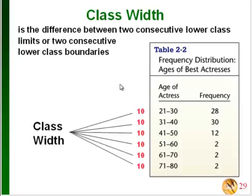This is an easy one to get a little bit mixed up on. Class width is not just the difference between the upper and the lower class limits. It's the difference between one lower class limit and the next lower class limit — in other words, it's the distance between the actual classes. In this case that would be 10.